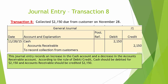Transaction number 8: Collected $2,150 due from a customer on November 28. This journal entry records an increase in the cash account and a decrease in the accounts receivable account. According to the rules of debit and credit, cash should be debited for $2,150 and accounts receivable should be credited $2,150.